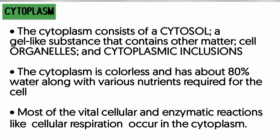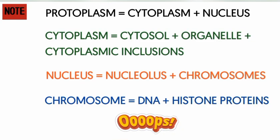An important note: protoplasm refers to the living part of the cell. Protoplasm is made up of cytoplasm and nucleus. The cytoplasm is made up of cytosol, organelles, and cytoplasmic inclusions. The nucleus is divided into the nucleolus and chromosomes, and the chromosomes are further divided into DNA and histone proteins. You can see the trend — from the protoplasm as the full cell down to DNA and histone proteins.